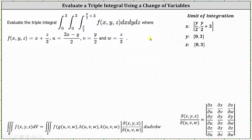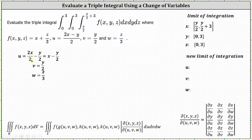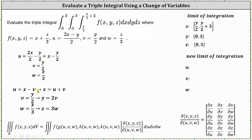We'll begin by determining the new intervals of integration for u, v, and w. First, let's change the form of the equation for u. We have u equals the quantity two x minus y divided by two, which we can write as two x divided by two minus y divided by two, and therefore u equals x minus y divided by two. We'll leave the equations for v and w the same, and now we need to form equations for x, y, and z in terms of u, v, and w. We notice that y divided by two equals v, so the first equation becomes u equals x minus v, and solving for x gives x equals u plus v. Solving the second equation for y by multiplying both sides by two gives y equals two v. And solving the third equation for z by multiplying both sides by three gives z equals three w.